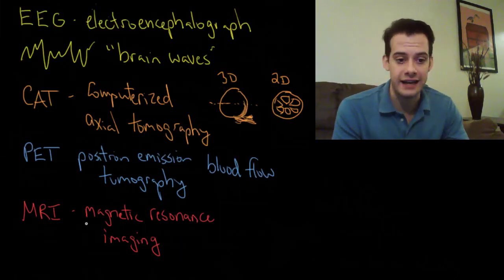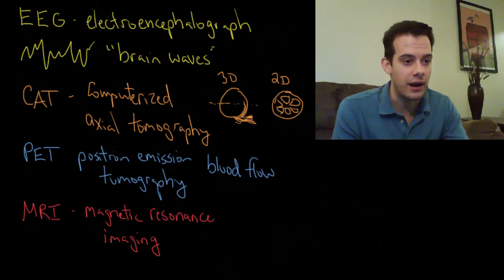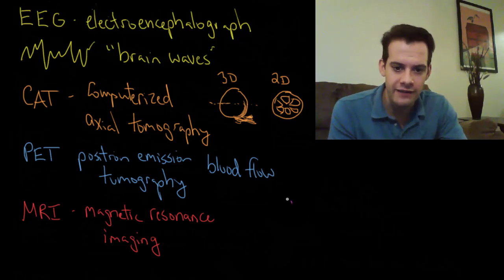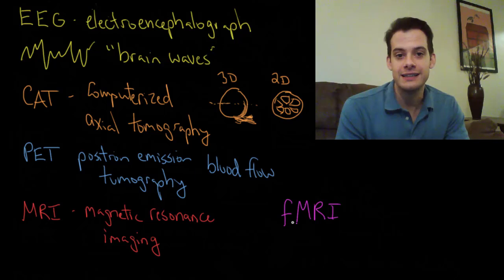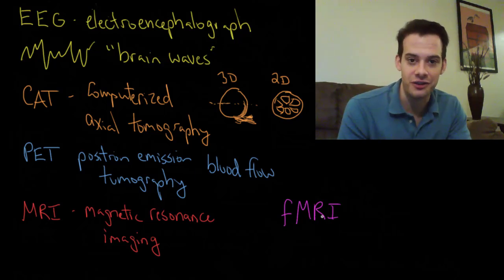We use the MRI and that's a structural technique but we can also use the MRI in a functional way. This is called an fMRI. It should be easy to remember that this is a functional technique because the f stands for functional. So this is a functional MRI.